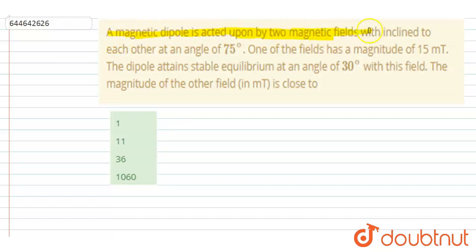Hello everyone. A magnetic dipole is acted upon by two magnetic fields inclined to each other at an angle 75 degrees. One of the fields has a magnitude of 15 milliTesla. The dipole attains stable equilibrium at 30 degrees with this field. The magnitude of the other field is equal to?